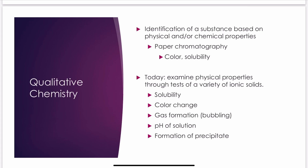Today you're going to examine physical properties through tests of a variety of ionic solids. Ionic means a cation and an anion paired up — most often metal and non-metal, but you could also have two polyatomics like ammonium with something else. You're looking for solubility, color change, gas formation exhibited by bubbling, the pH of the solution (is it acidic, basic, or neutral?), and the formation of a precipitate, meaning does a solid form — a solid separate from what you originally started with.